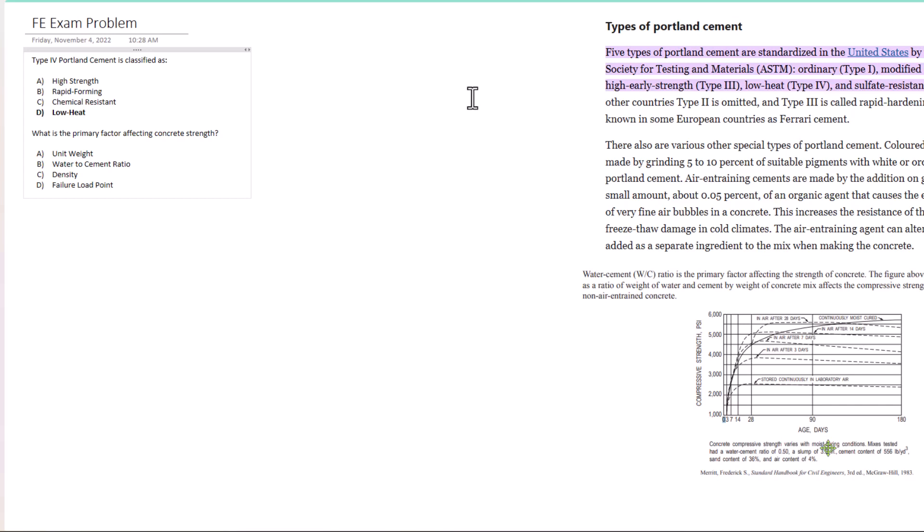That's the answer for this one. We know it can't be rapid forming because that's Type 3, which is rapid hardening. Type 5 is known as ferritic cement. Like I said, we narrowed it down to two options. The correct answer is D.